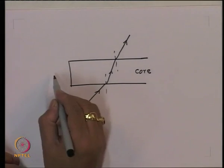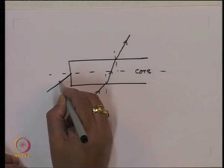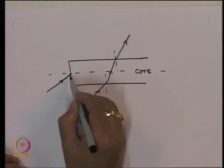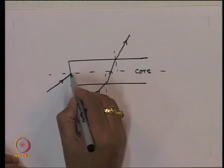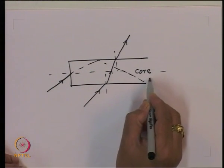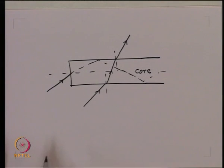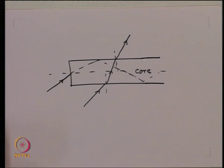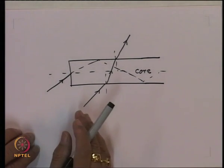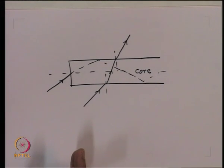That means the only possibility for sending light inside the core is that the light has to go from the tip of the optical fiber. If the light goes from the tip, it will get inside, and through multiple reflections at the boundary, the light will get guided inside the core. Light can be launched inside the structure only through the tip of the optical fiber.